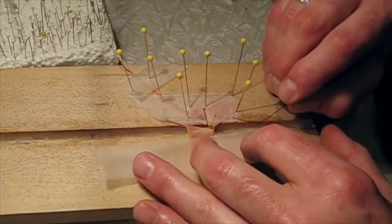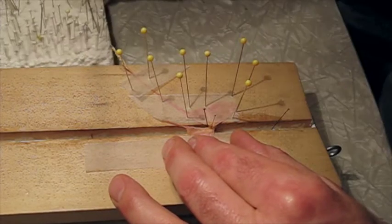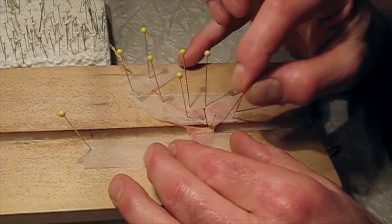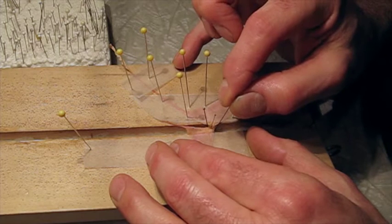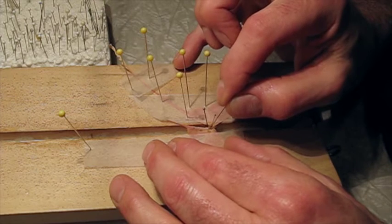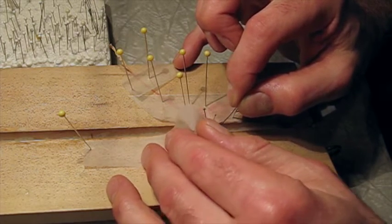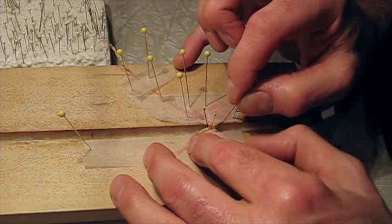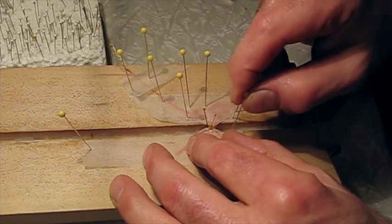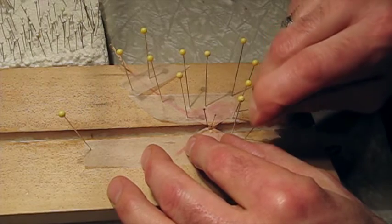And we're going to line the glassine sheet up with this other side so that we can get the wing in the right place. Put a pin down at the bottom to hold it. Pull the fore wing up into position. There. I'm going to get that hind wing up there, too, so it doesn't get lost. There. Pull the fore wing up into position. There. Hold that in place.